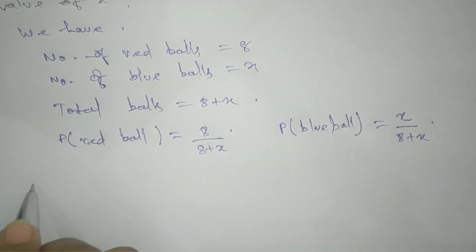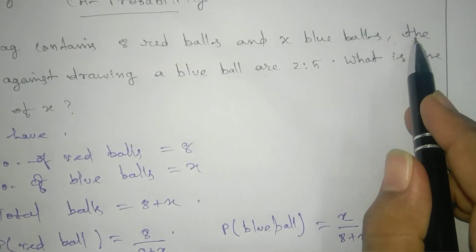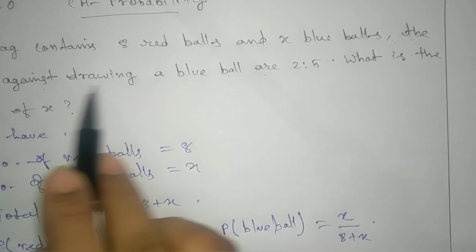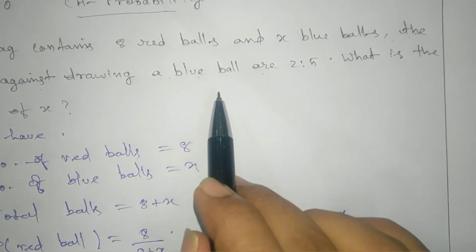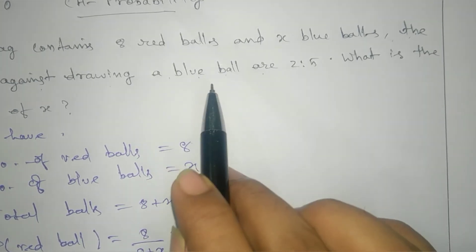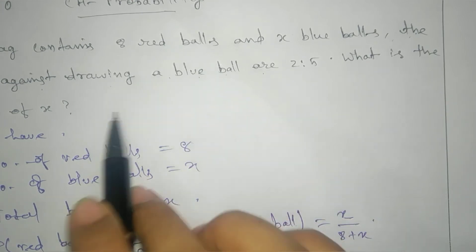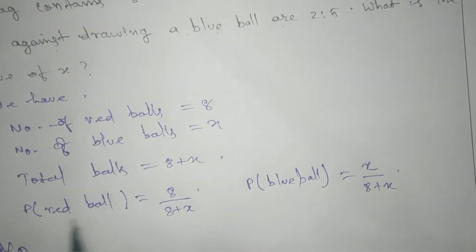Now according to the question, the odds against drawing a blue ball. So drawing a blue ball is favor, and against is drawing a red ball.